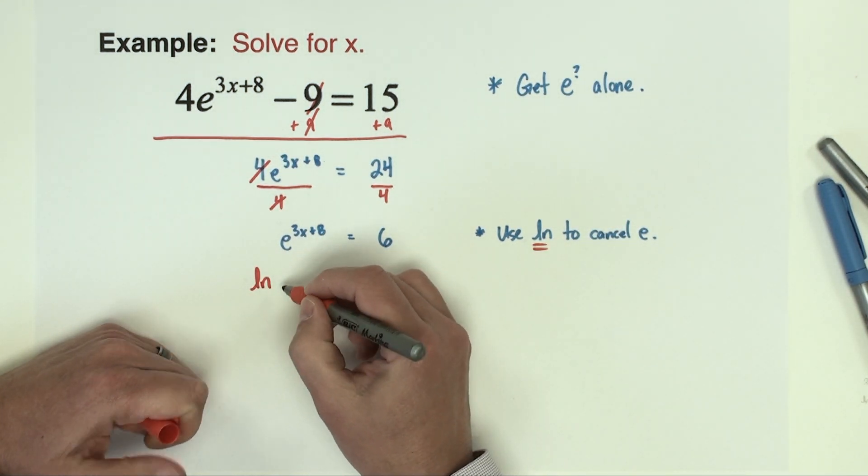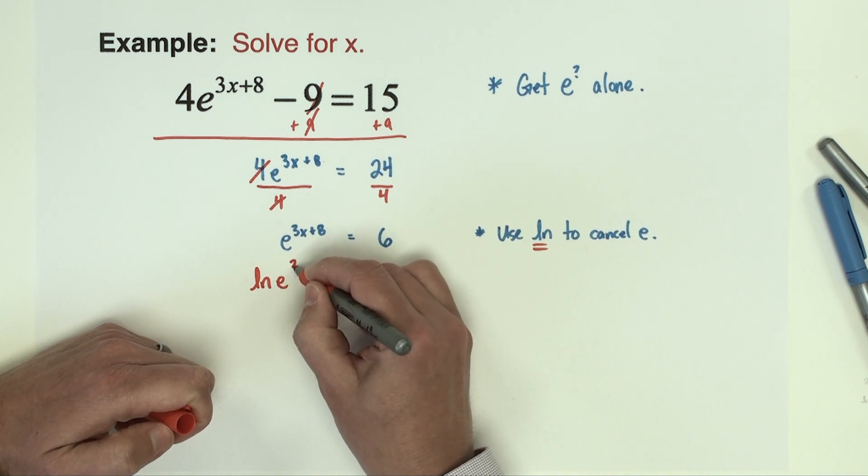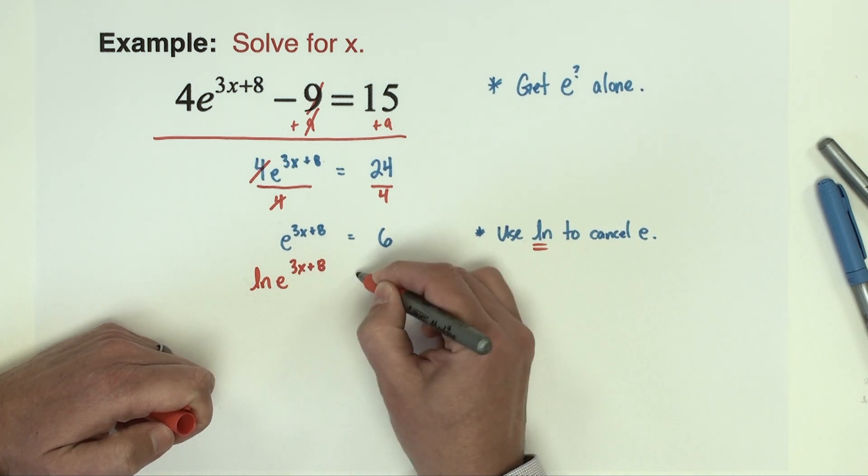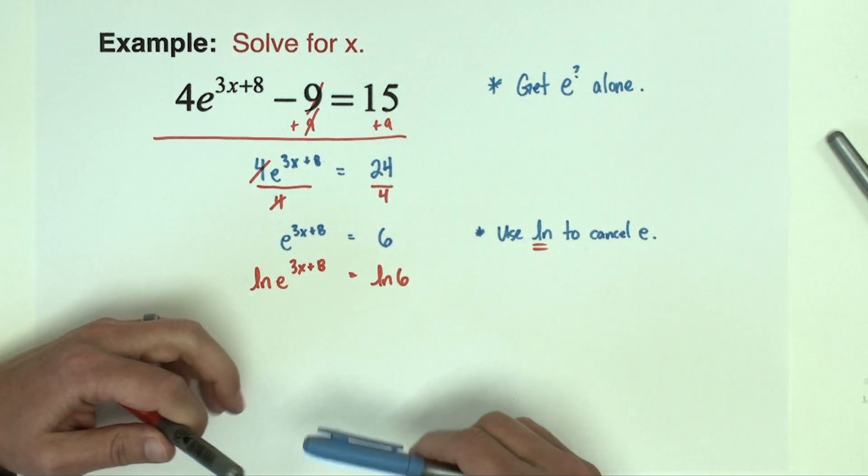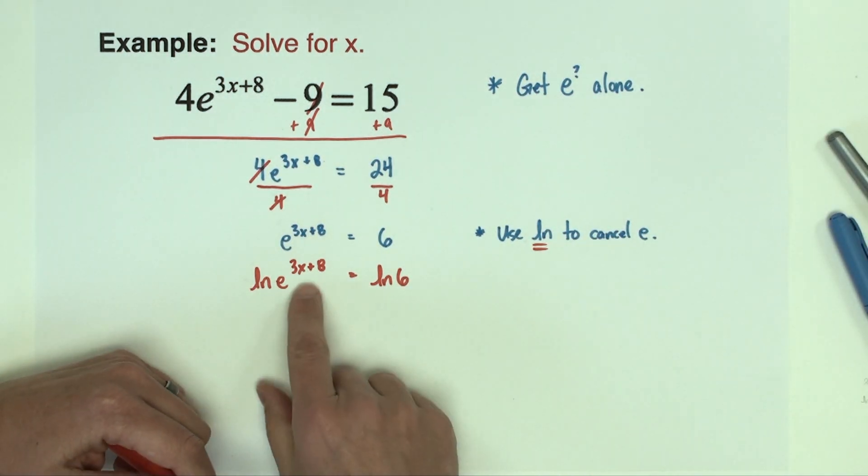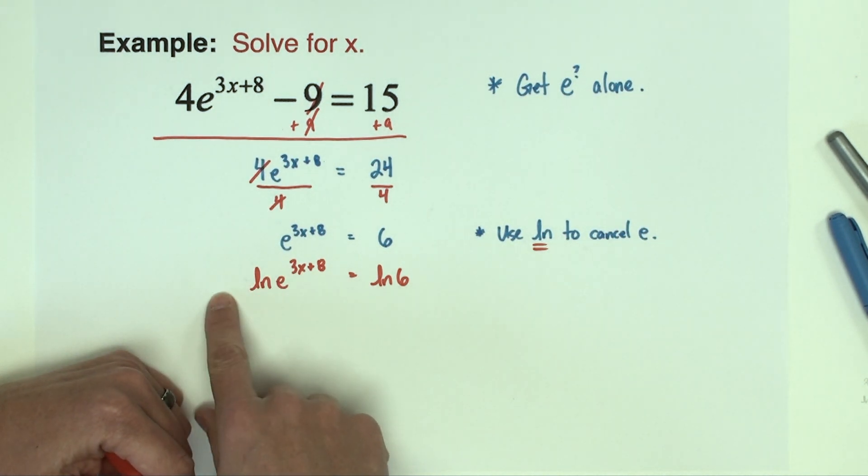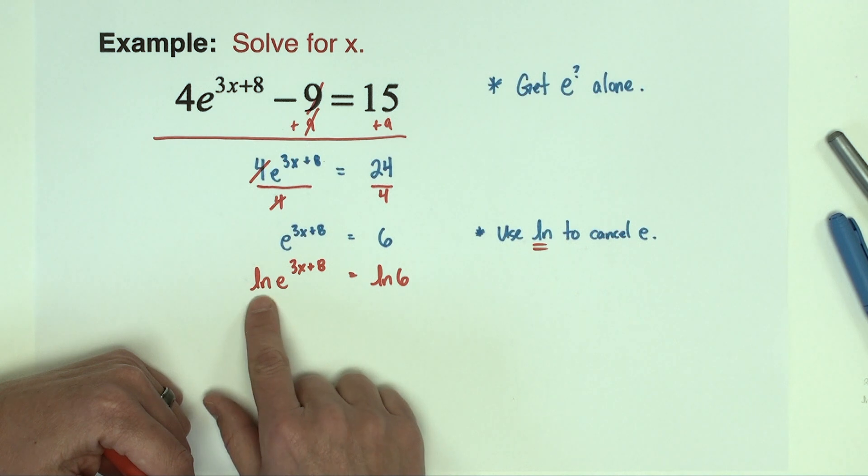So I'm just going to go ahead and do natural log to both sides, so that'll look like this. Natural log of e^(3x+8) equals natural log six. Now unlike before, we're not going to have to take this power and move it to the front necessarily because what we have here is an instance where we have inverse functions going on.